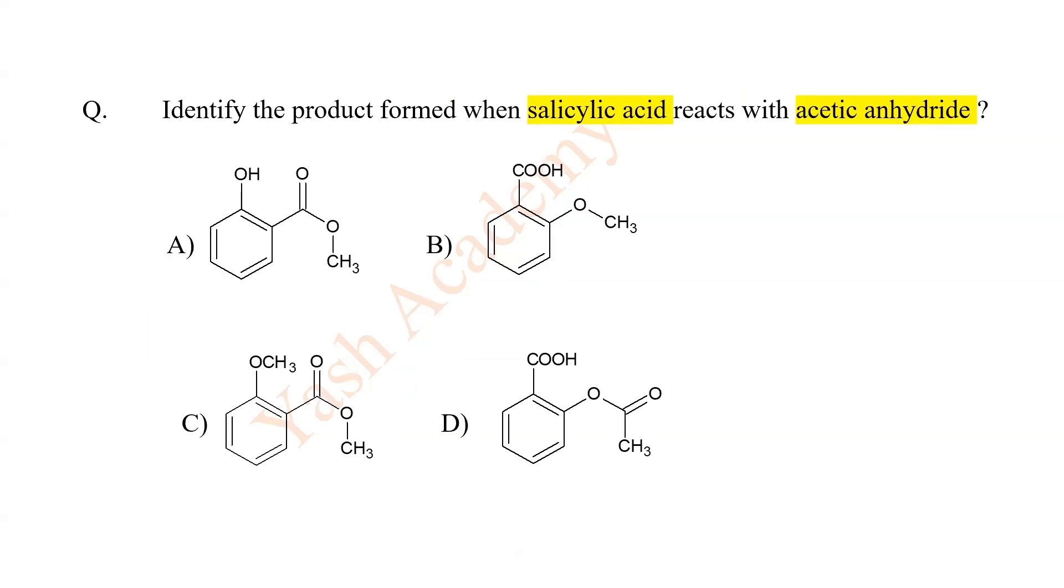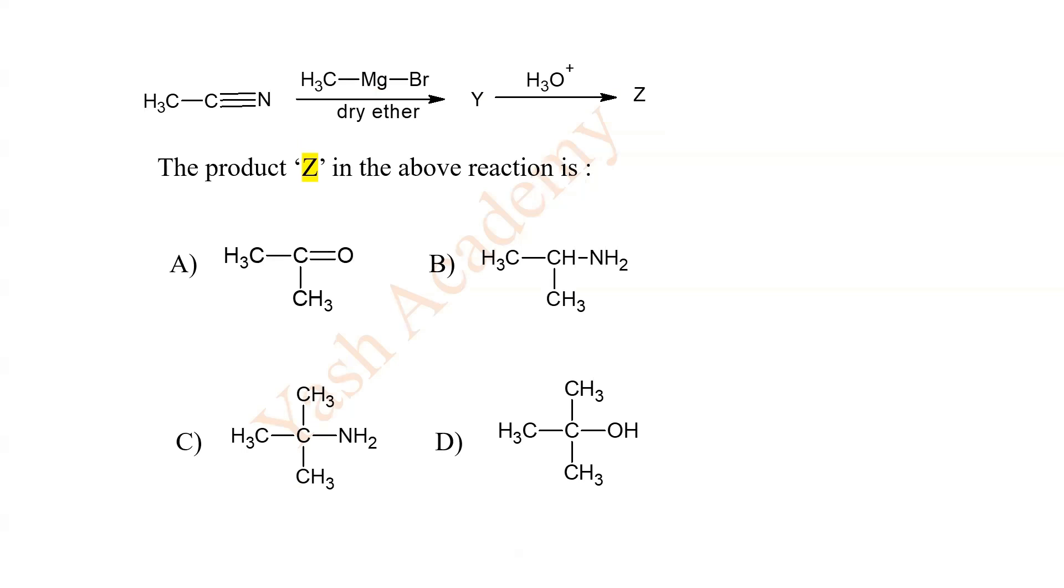Identify the product formed when salicylic acid reacts with acetic anhydride. D. A reaction is given. The product Z in the above reaction is A. Acetone.